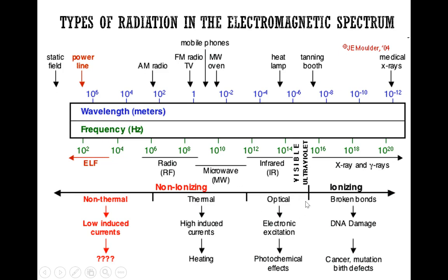Towards the right side of the non-ionizing region, close to the boundary with ionizing radiation, we have infrared radiation and the optical types. These produce electronic excitation and release light. Examples include infrared light, heat lamps, visible light from the Sun, and ultraviolet light. Ultraviolet is right at the cusp between ionizing and non-ionizing radiation — some UV rays, especially UVC, do exhibit some ionizing properties.